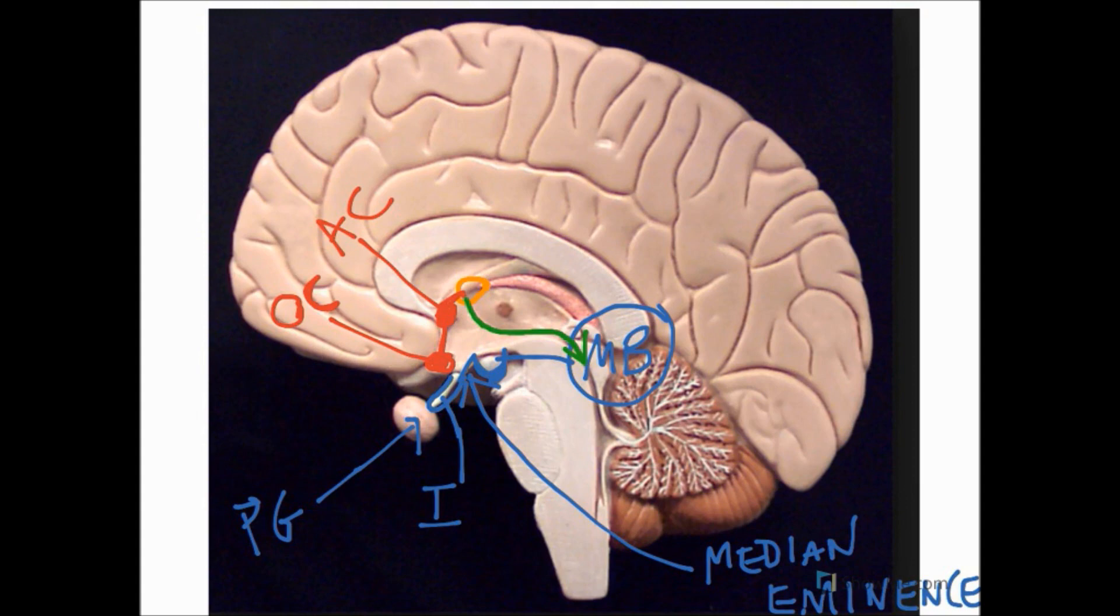If we take the most posterior part of the mammary bodies and draw a line up here connecting it to the hypothalamic sulcus, that's really marking out the extent of the hypothalamus.